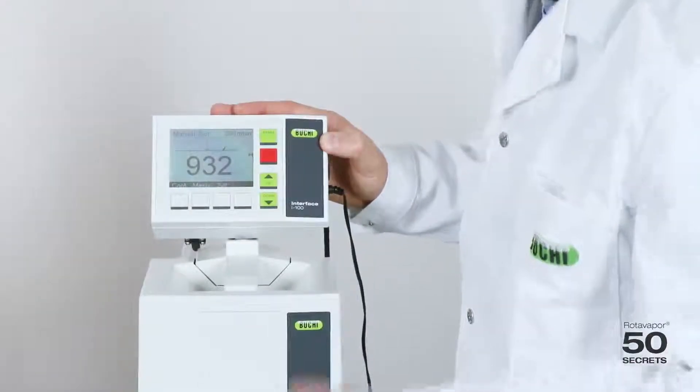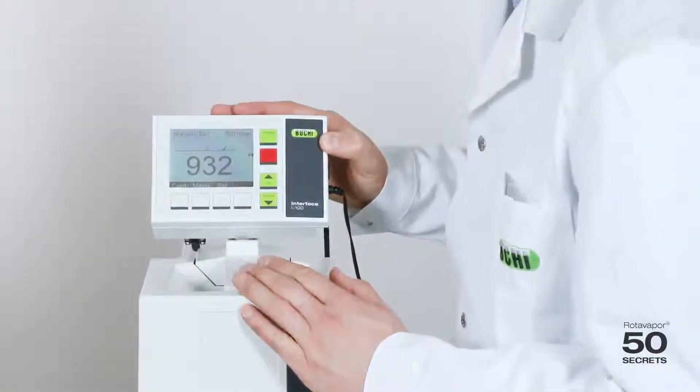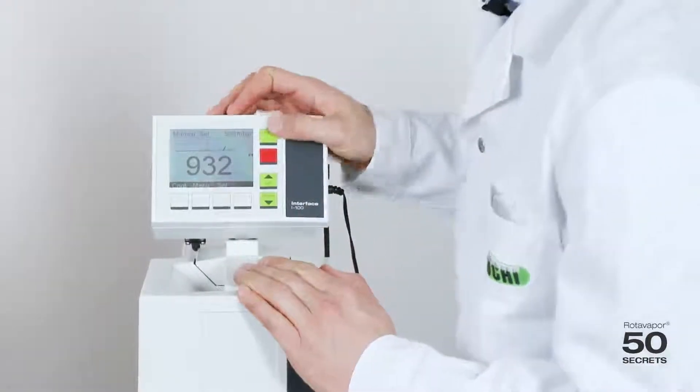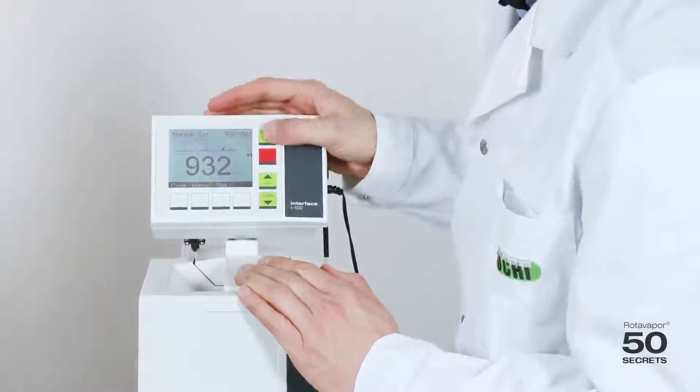First, I would like to talk about the V100 vacuum pump, which has on-off. I would like to show you how that works. I set it to 500 millibar, I press start.